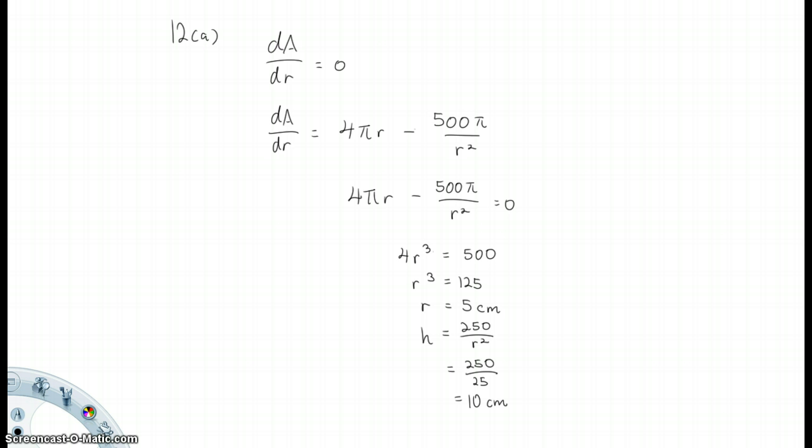So the second part B, find the cost of the material used to be the least. Again, we already know the dimensions of r right now from part A. r is 5 cm and h is 10 cm. Now you want to find the cost. People already tell you that the curved surface area is 0.5 cm. This is 5 cm and 3 cm for the base, 5 cm for the curve surface.